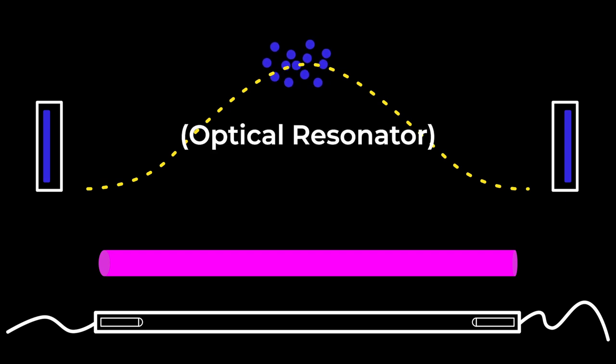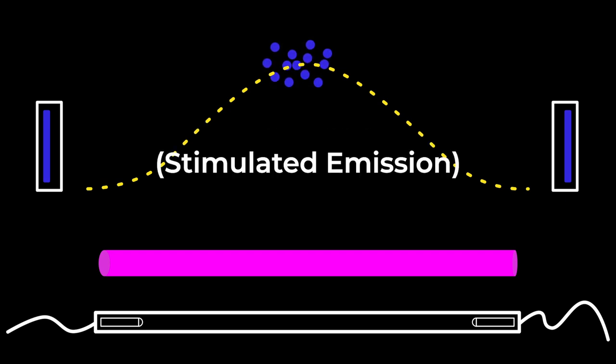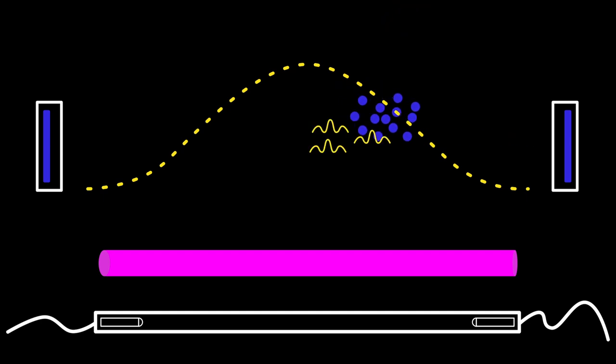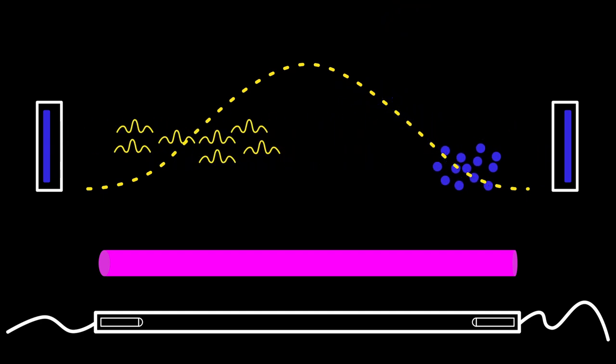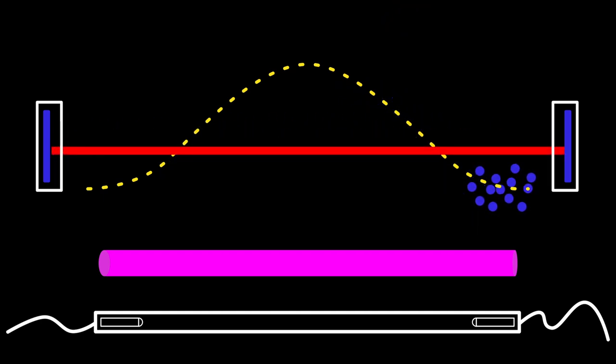And with some cleverly placed mirrors and quantum mechanical fuckery, you can form the energy they give off when they fall back down the hill into a coherent beam of photons all traveling in the same direction and all with the same wavelength. A laser beam.